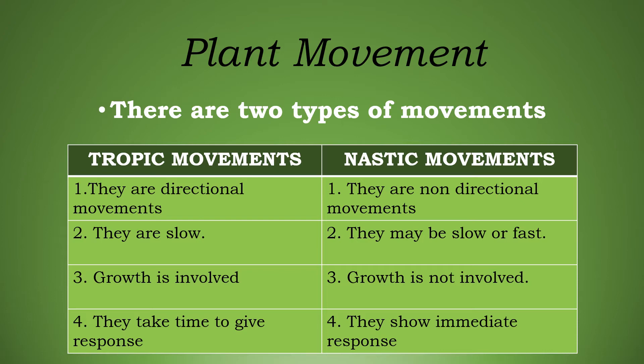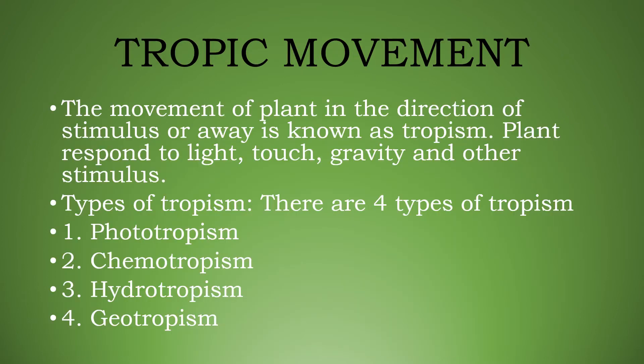Tropic movements are movements that occur in the direction of the stimulus or away from it — such a movement is called tropism. Plants respond to light, touch, gravity, and other stimuli. Tropism is of four types: phototropism, chemotropism, hydrotropism, and geotropism. We will study each one.